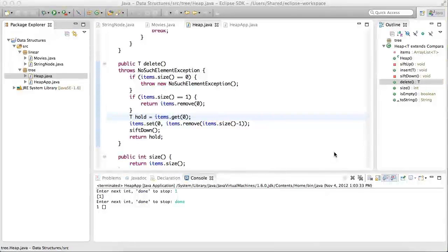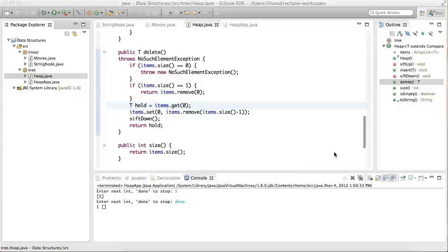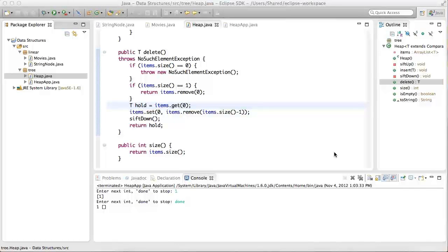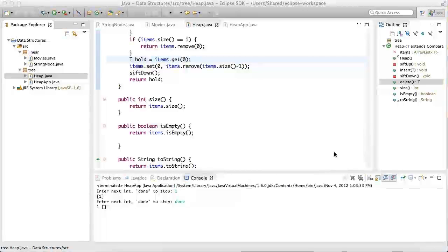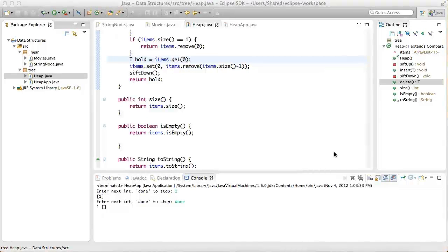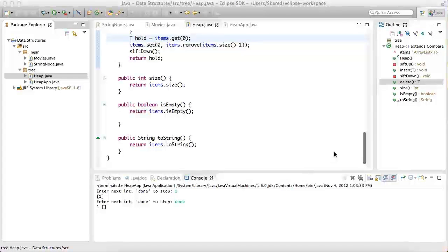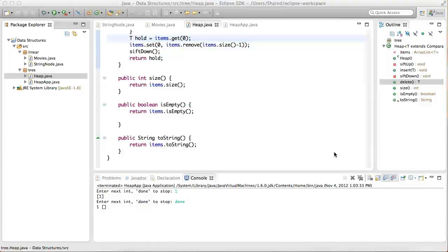The rest of the implementation of the heap class is a set of convenience methods to return the size of the heap, to tell if a heap is empty or not, and to return a string representation of the items in the heap, using the ArrayList method toString on the items object.